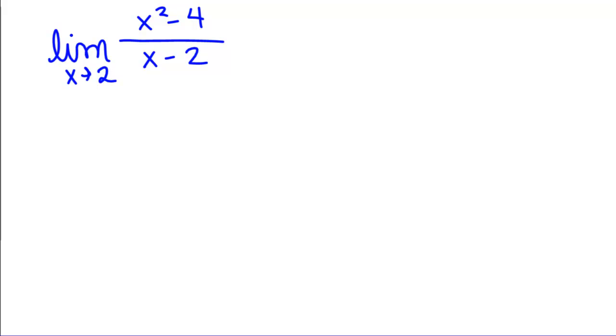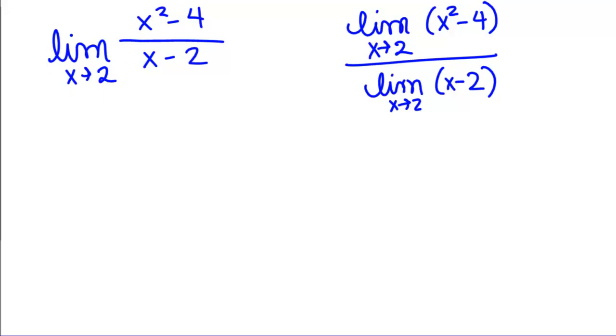In this limit, if we're trying to use the limit laws, we would split it apart and we would have limit as x goes to 2 on the top of x squared minus 4 divided by the limit as x goes to 2 on the bottom of x minus 2.